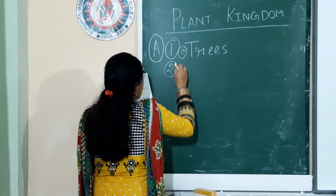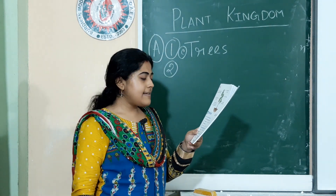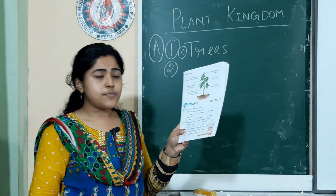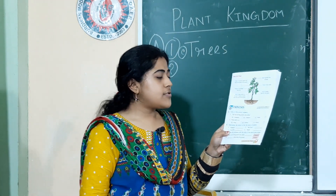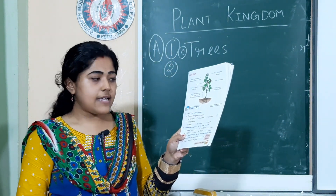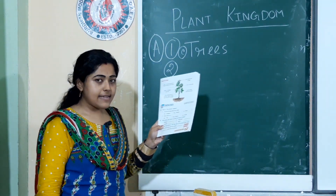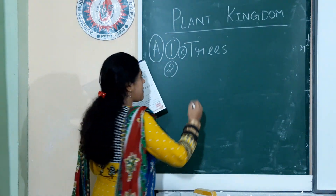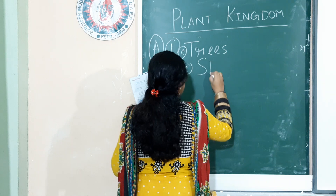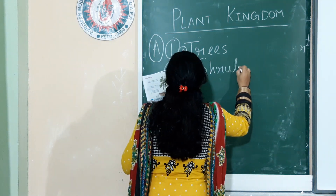Come to the second question: A rose plant is a — the options are tree, climbers, and shrub. The answer is option C: shrub. Copy it in your copy book.